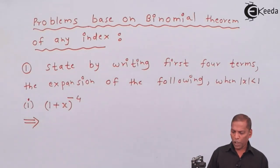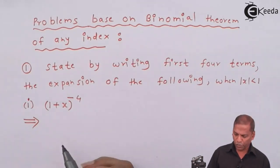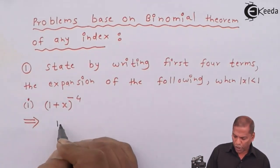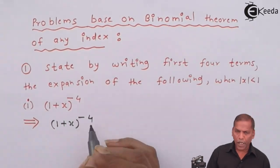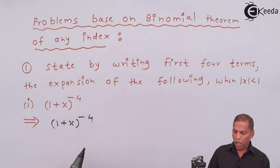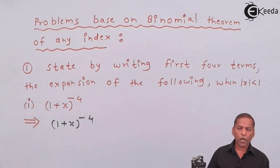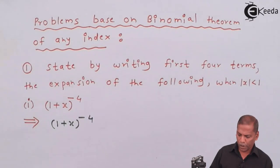So for this we have to write first four terms. First of all we start with the question, (1+x) raised to minus 4. Now here we apply the binomial theorem for any index.